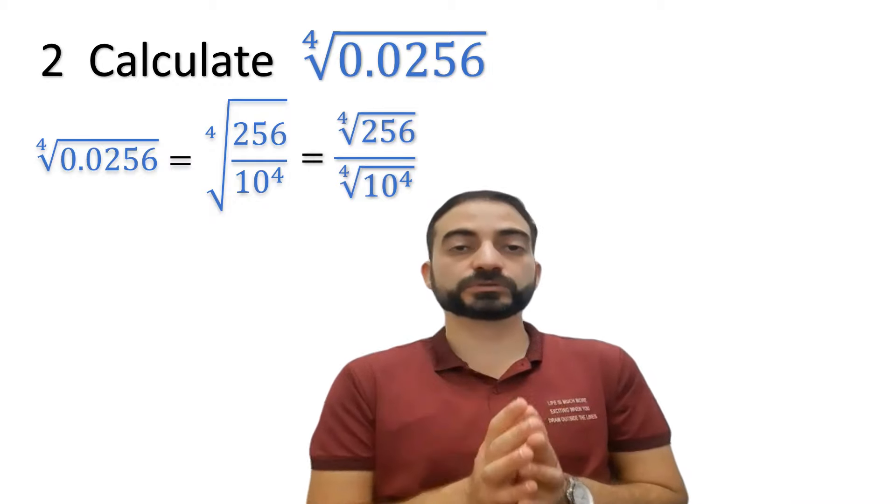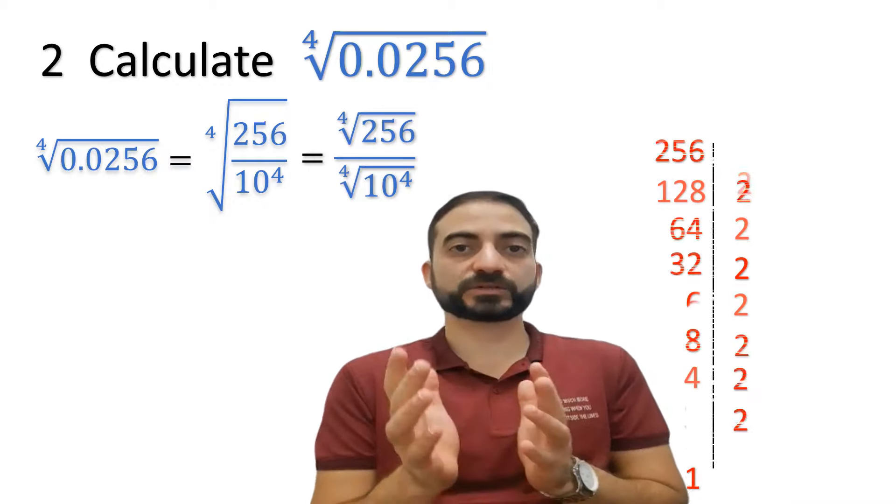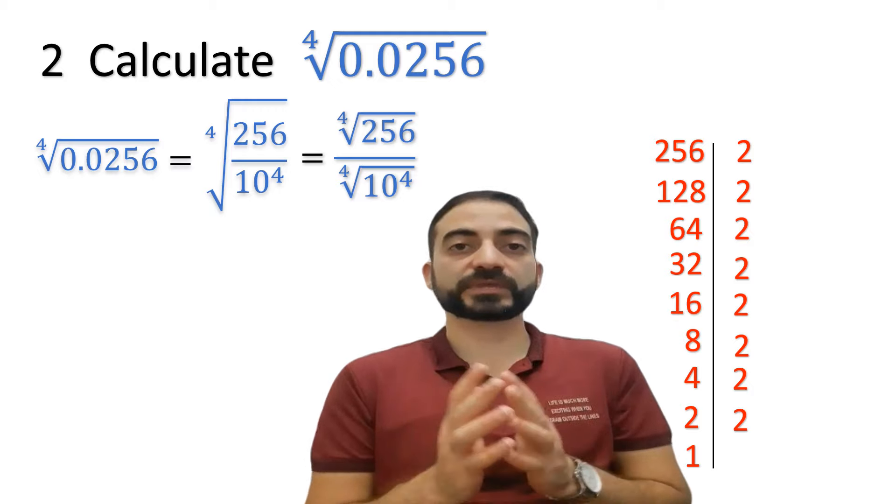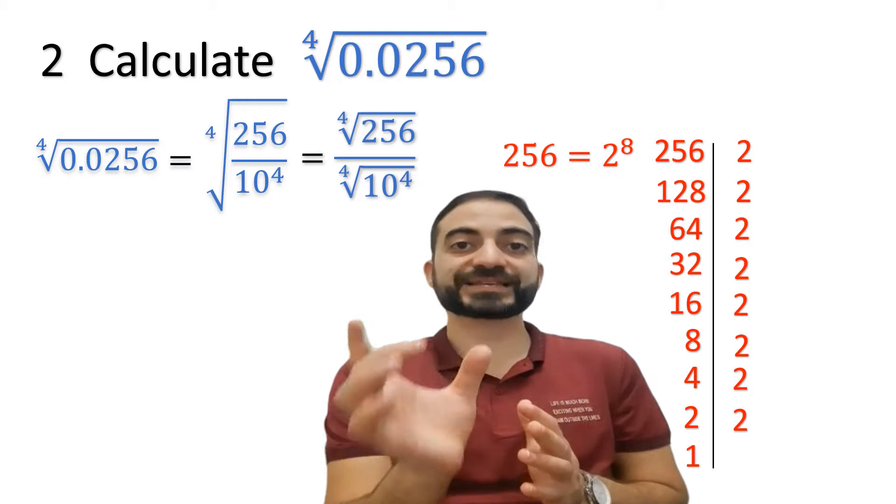As long as we have the fourth root, in order to be able to get rid of the fourth root, we must think about dividing the 256 in this way.